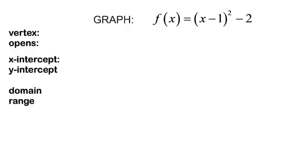We want to graph f of x is equal to x minus 1 squared minus 2. This is a parabola because of the x that will be squared — it is a quadratic equation. Since it is in this form, I can easily see the vertex with very little work. The vertex is positive 1, negative 2.